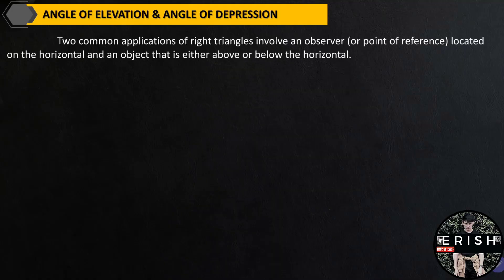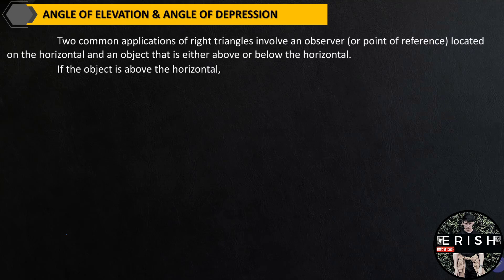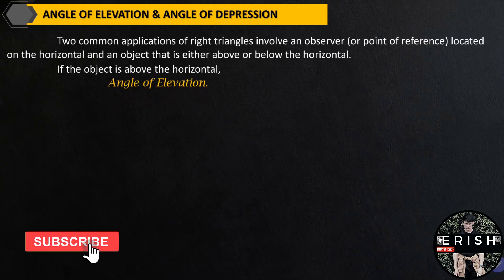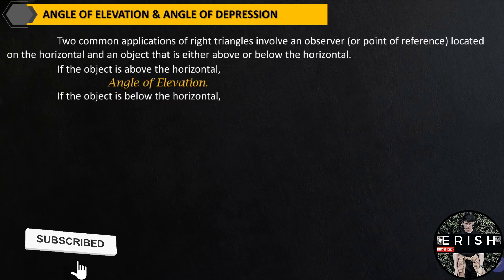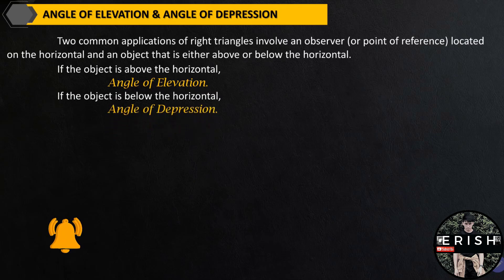Two common applications of right triangles involve an observer or a point of reference located on the horizontal and an object that is either above or below the horizontal. If the object is above the horizontal, we call the angle the angle of elevation. And if the object is below the horizontal, we call it the angle of depression. We will use these two terminologies in our coming examples.